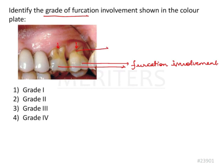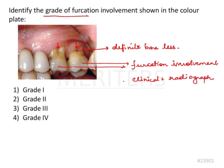There is definite bone loss in the furcation. The diagnosis of furcation involvement is both clinical and radiographic — let's not forget that. The image here is only clinical and does not show the probing with the Nabers probe. You cannot see anything with the probe here; they have not shown that.